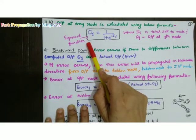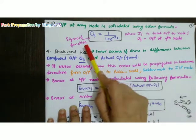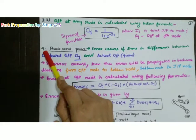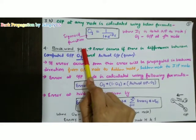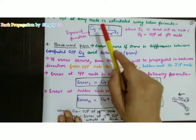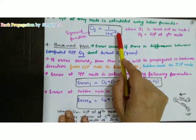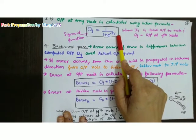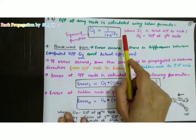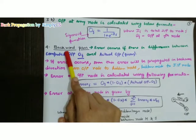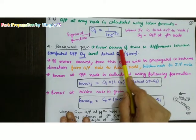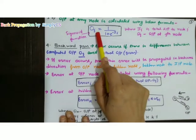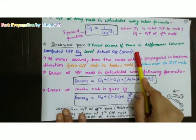We can use any activation function, but generally we use the sigmoid function. The fourth step is the backward pass. In step 3, we calculated inputs and outputs at all nodes and got the final computed output. In the backward pass, an error occurs if there is a difference between the computed output O_j and the actual output given.